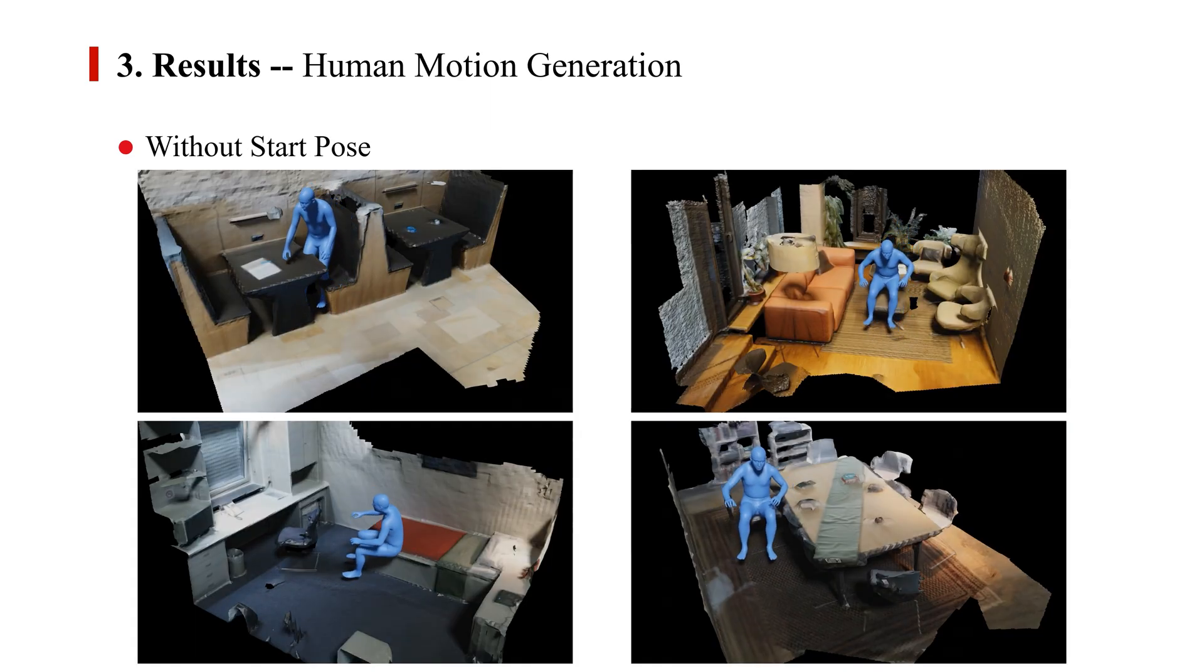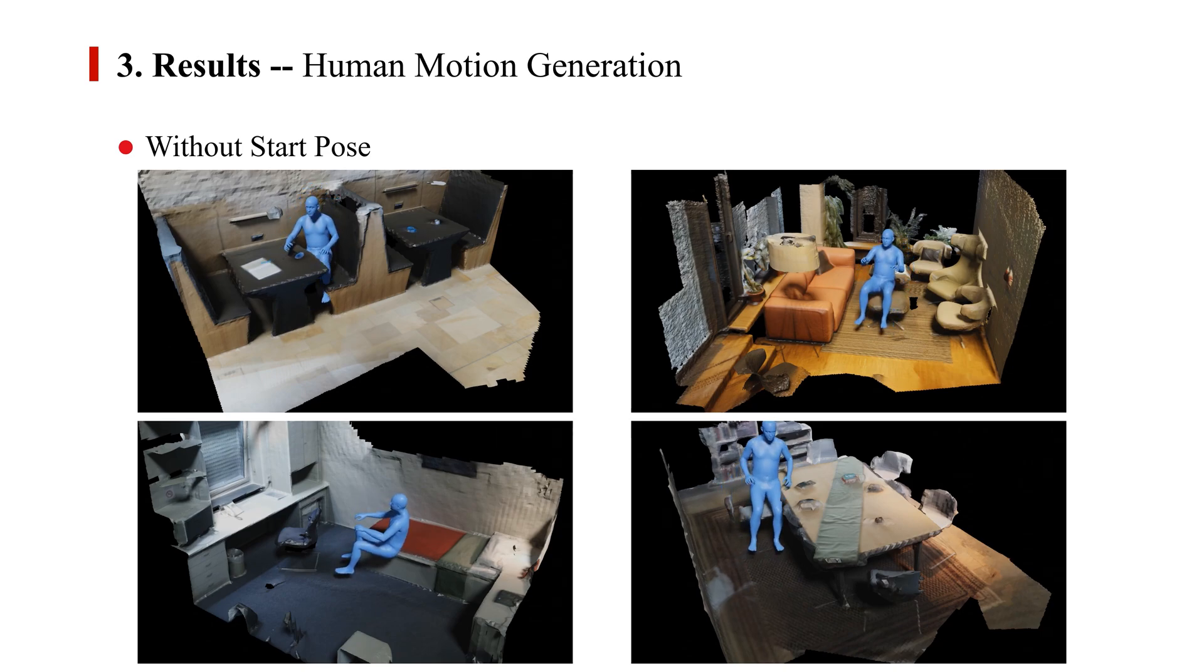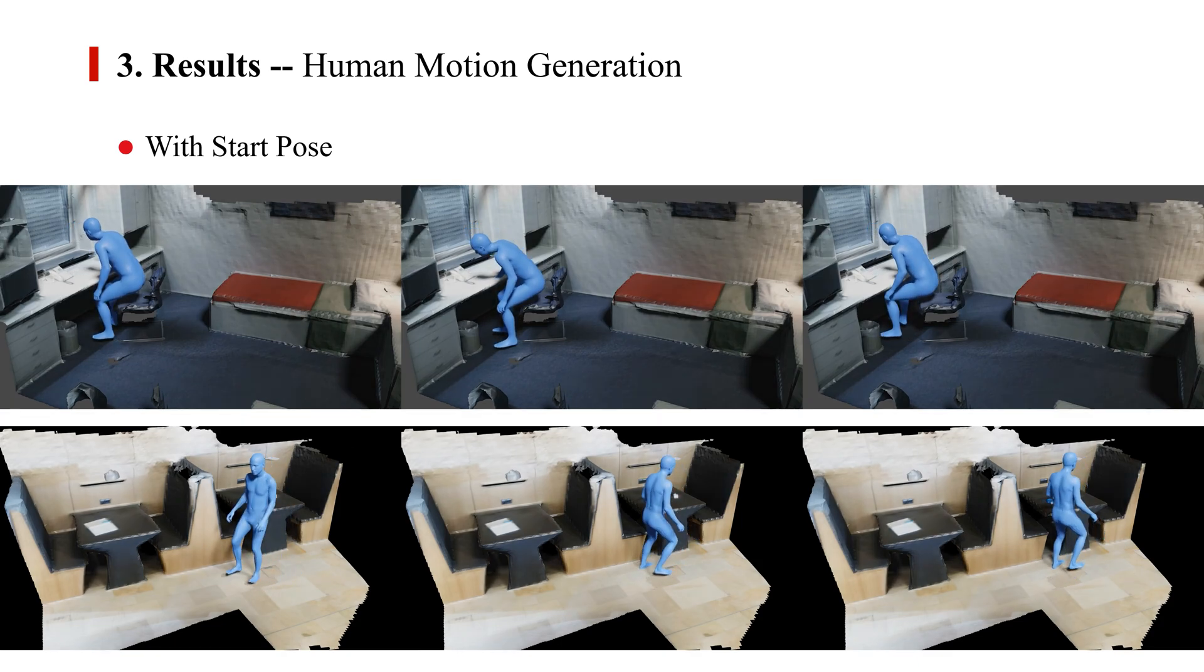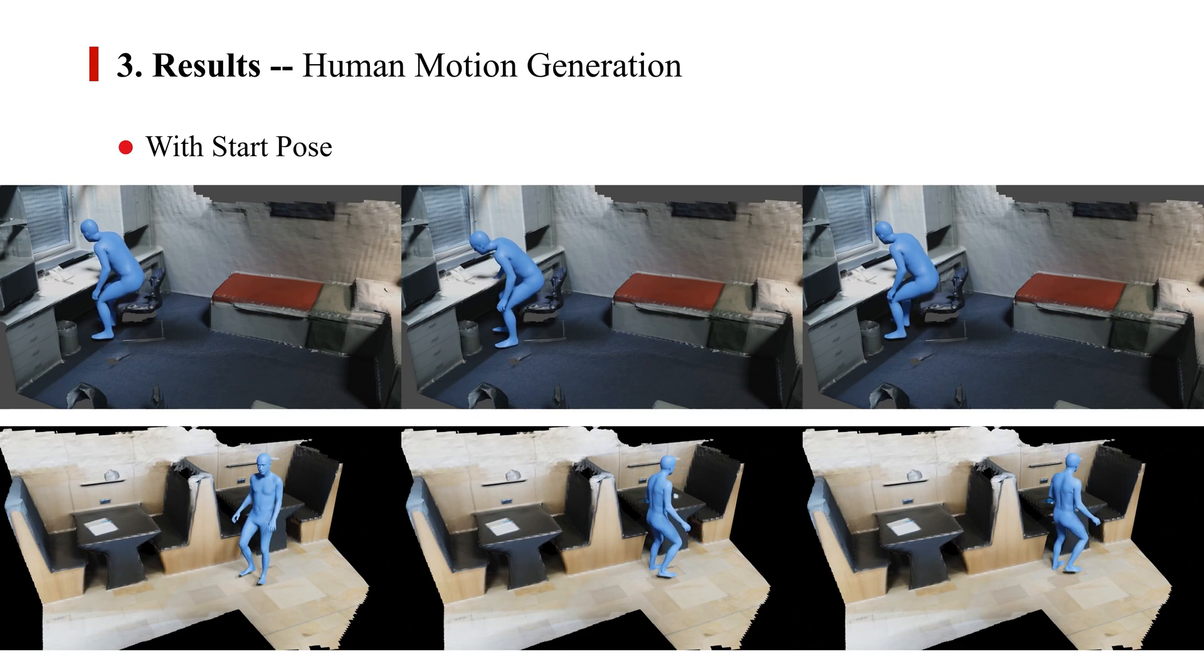For human motion generation, the Scene Diffuser can generate plausible and visually appealing results solely conditioned on the 3D scenes. Scene Diffuser also generates diverse motions from the same start position in unseen 3D scenes, such as sitting, standing up, and walking.